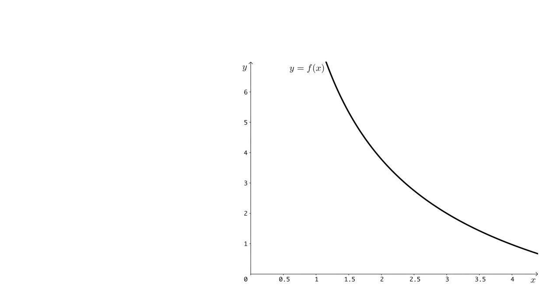In this video, I'll introduce the idea of a one-sided limit. In the first video, we looked at a function that had a hole at x equals 2. Our goal was to find the precise height of the hole, and this height was the limit as x approaches 2 of f.